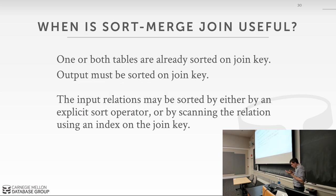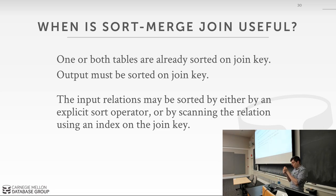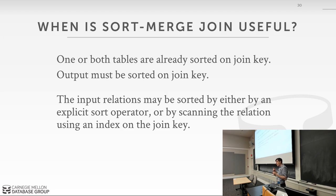When is sort-merge join useful? When the tables are already sorted on your join key — for example with an index organized table, there's no sort cost because it's already sorted. Also, if your query requires output sorted on the join key, you're killing two birds with one stone: you do the join and it produces output already sorted for your ORDER BY clause, so you don't need any extra sorting. The optimizer can recognize this and eliminate the sort operator entirely from the query plan.